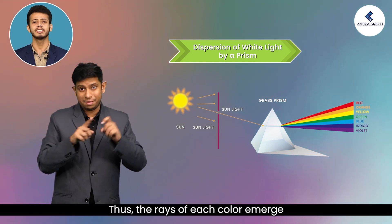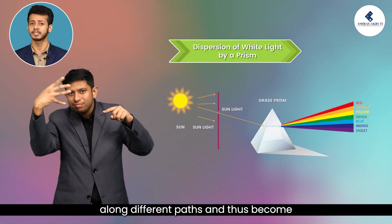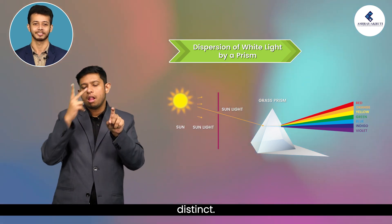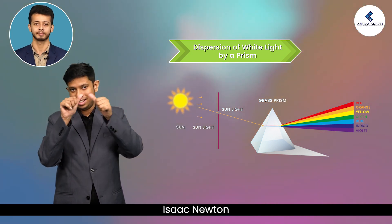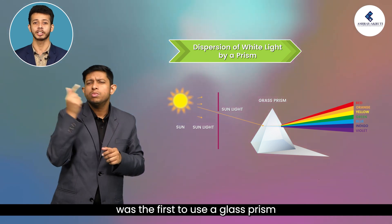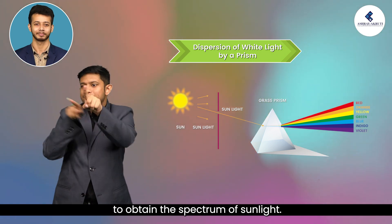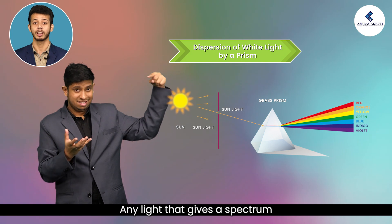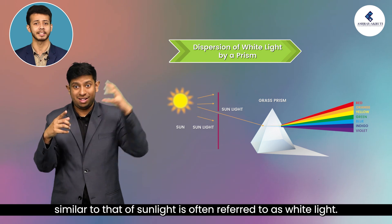Thus, the rays of each colour emerge along different paths and become distinct. Isaac Newton was the first to use a glass prism to obtain the spectrum of sunlight. Any light that gives a spectrum similar to that of sunlight is often referred to as white light.